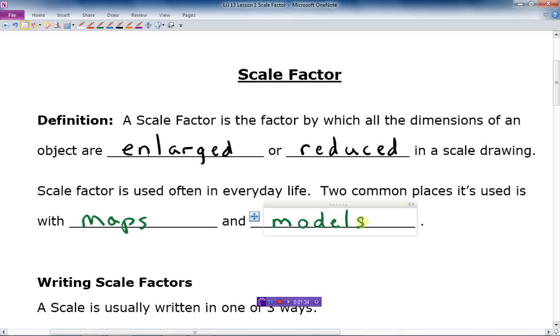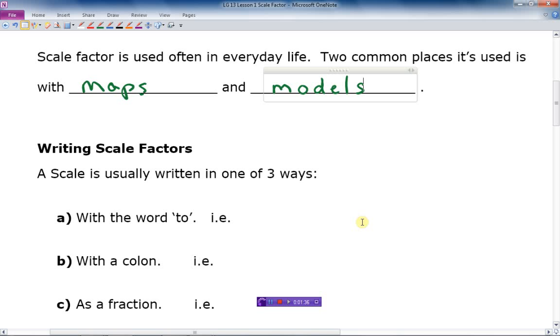Okay, so let's keep moving on. Writing scale factors. What does it look like, how do I write them? Well, there's three different ways to write them. One example would be, I used the numbers three and five, so the word 'to' was used. So I would write it down three to five, a scale of three to five.